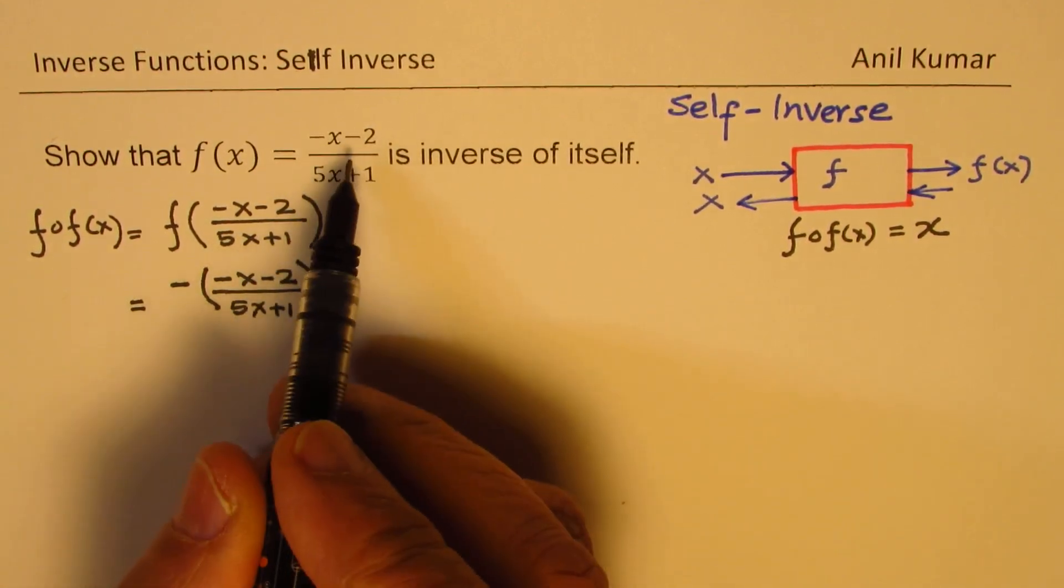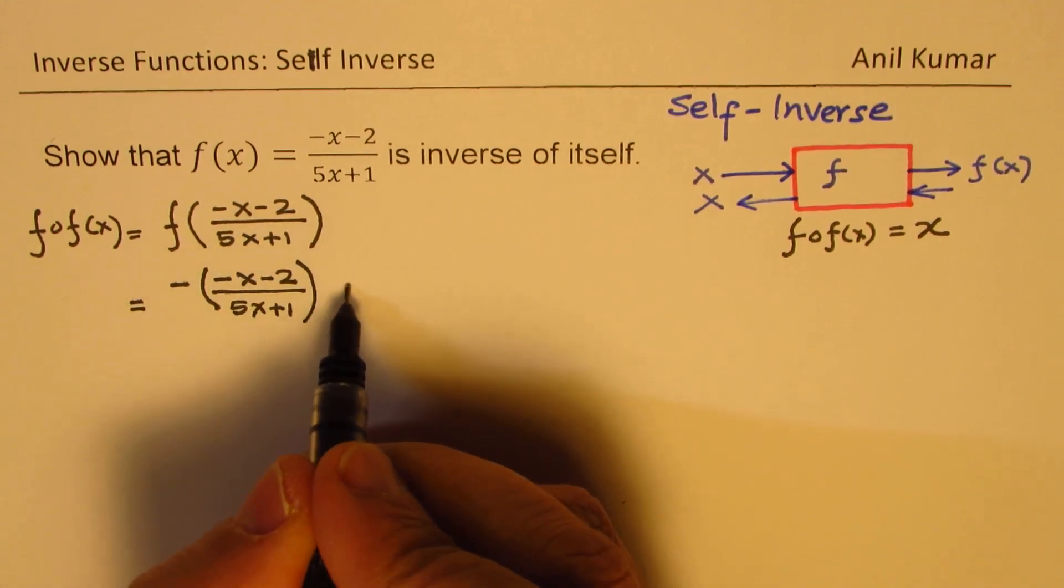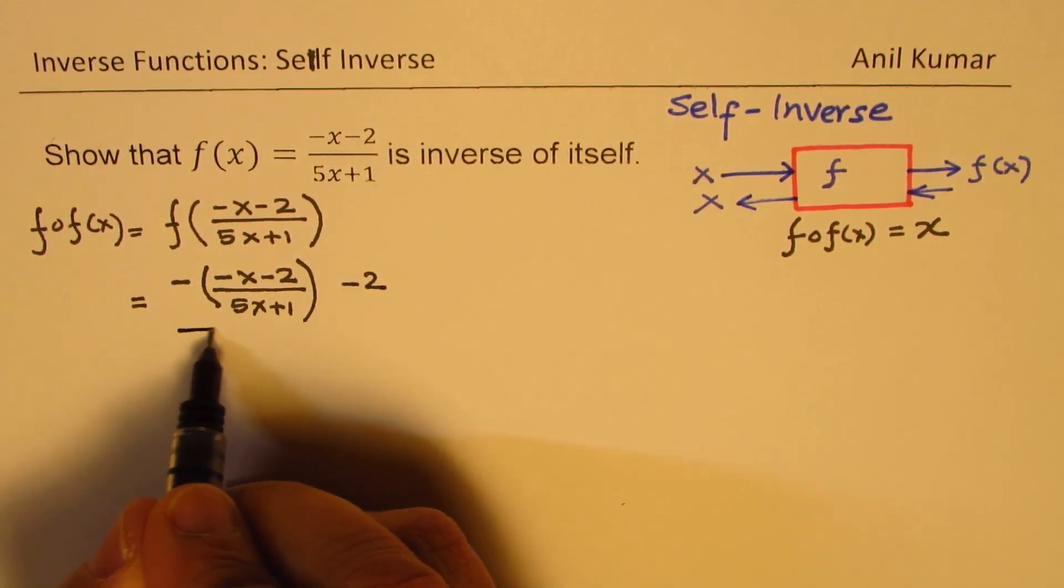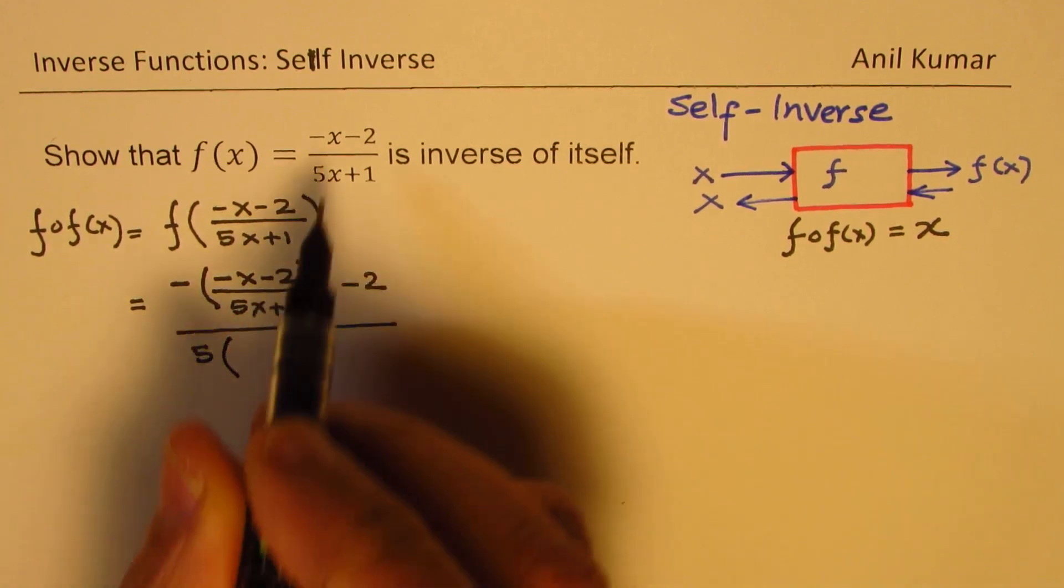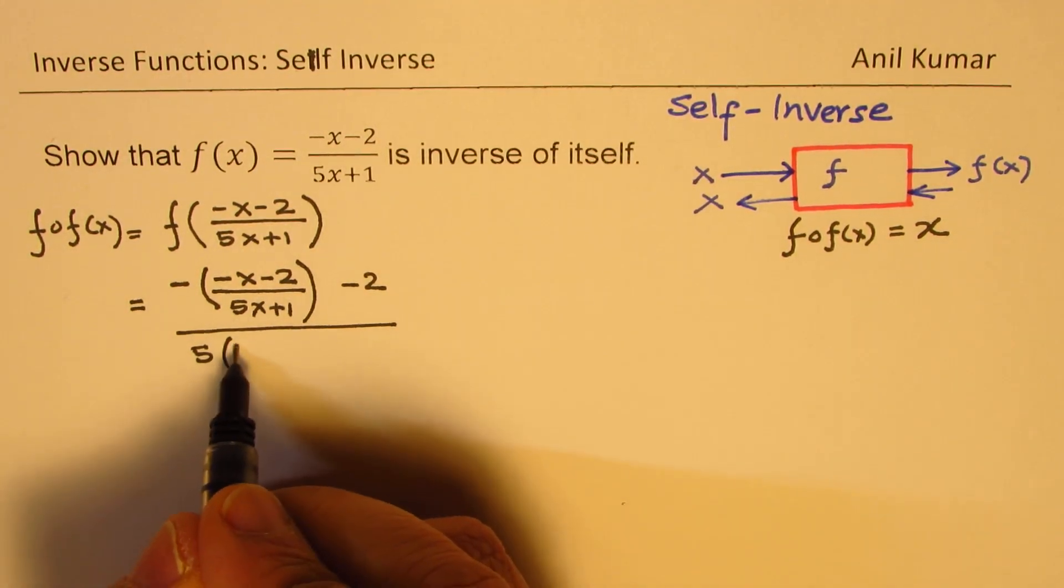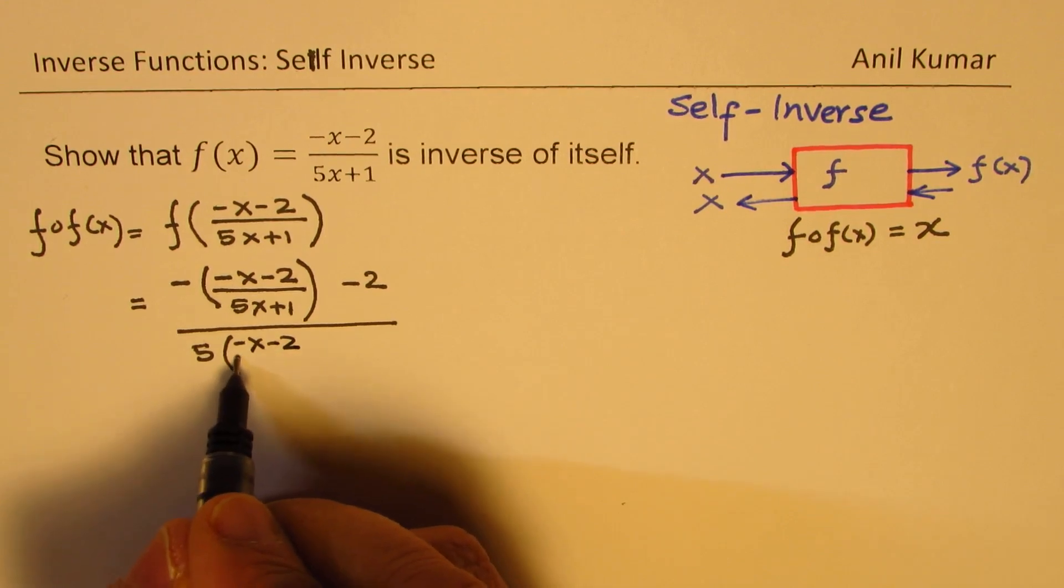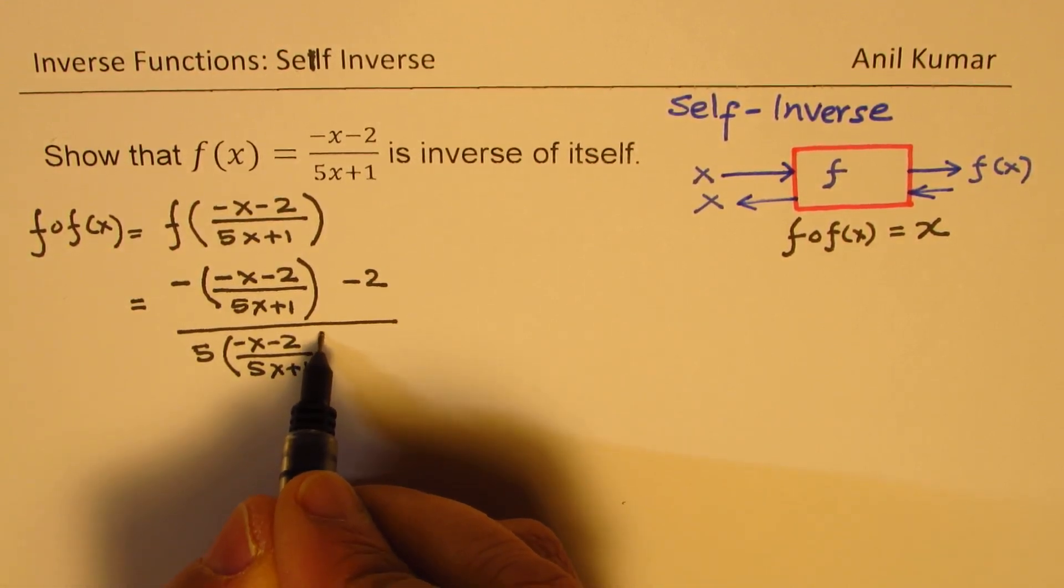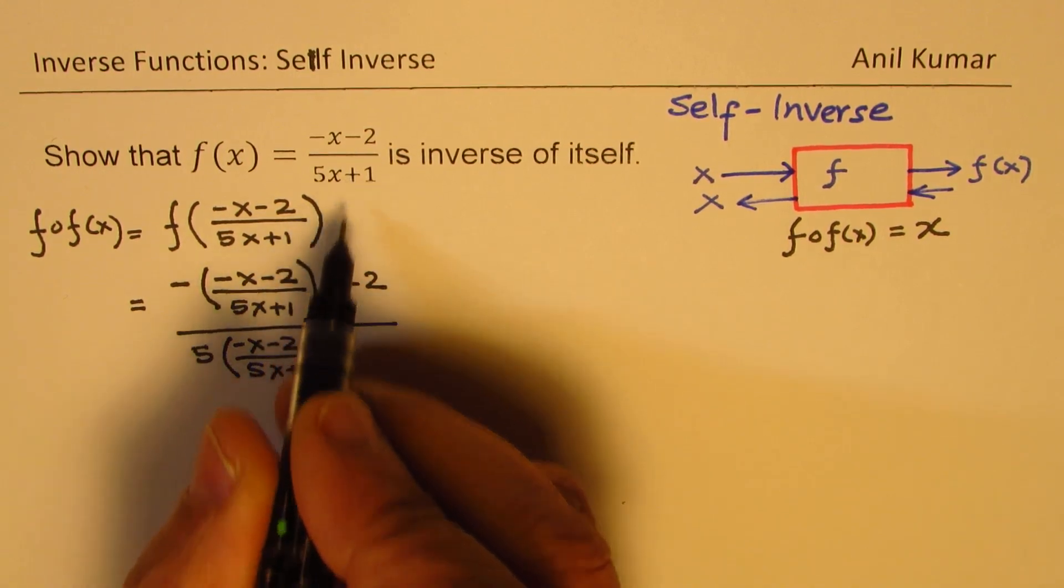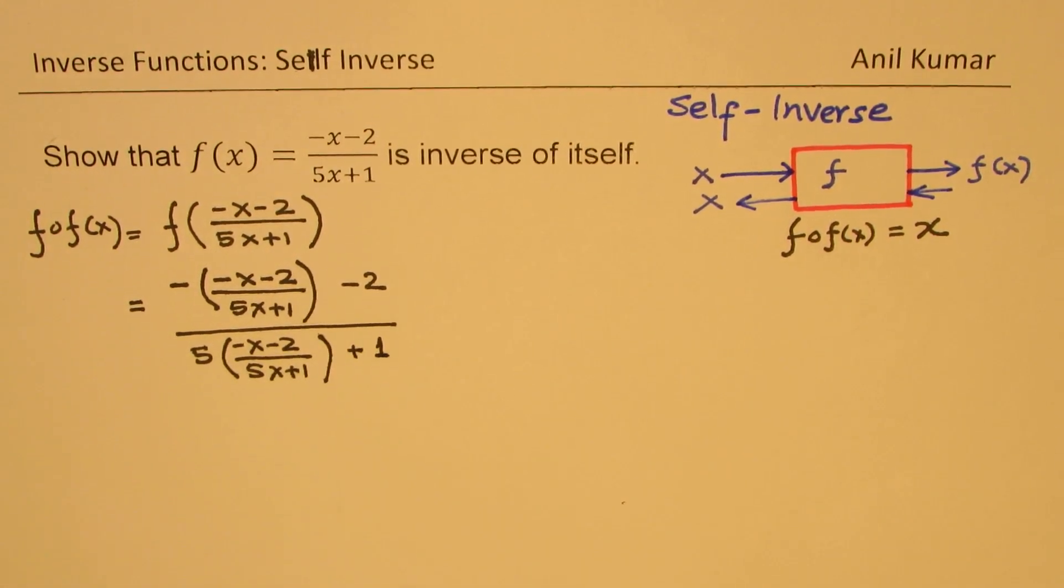So we replace this x with the whole expression. Then we have minus 2 here. And in the denominator, we have 5 times all this, which is minus x minus 2 over 5x plus 1. And we have plus 1. Is that clear to you? So that is the first step.